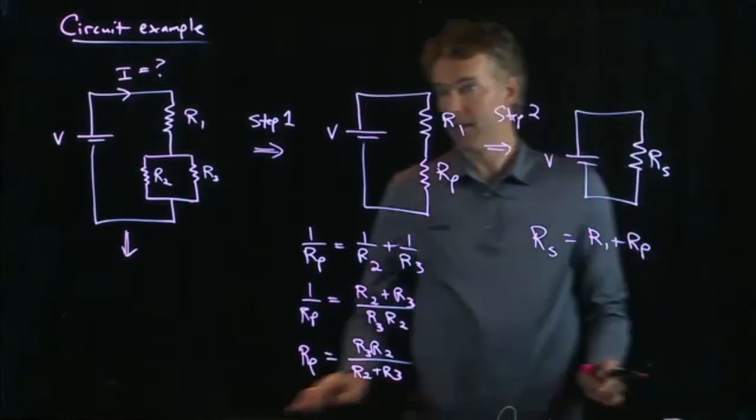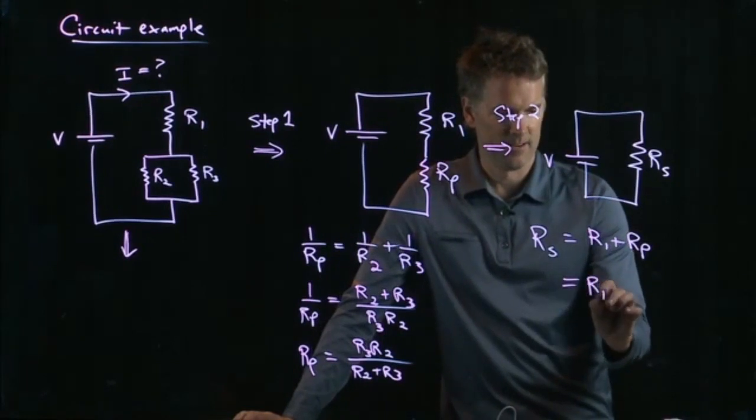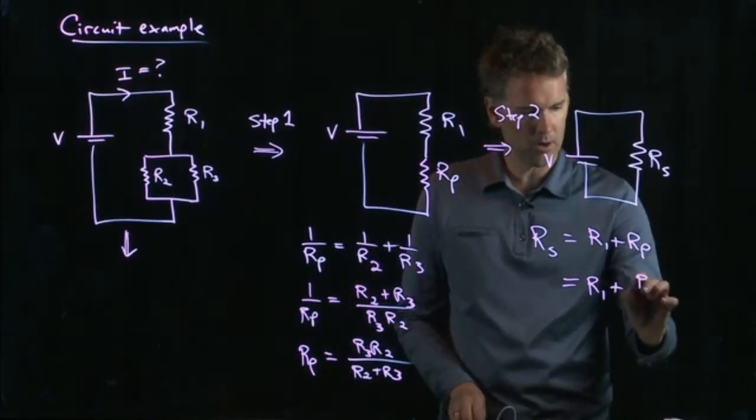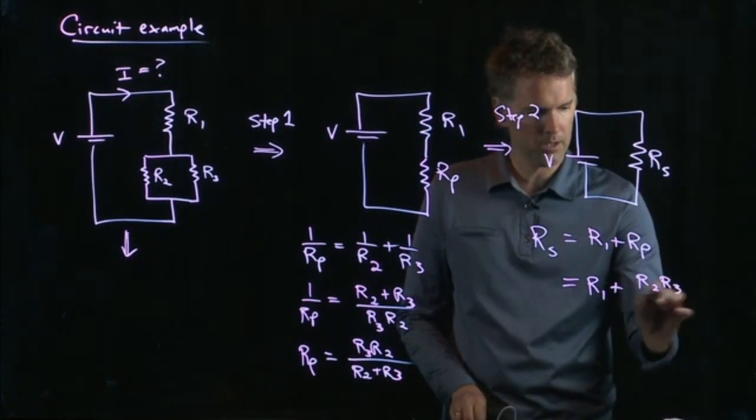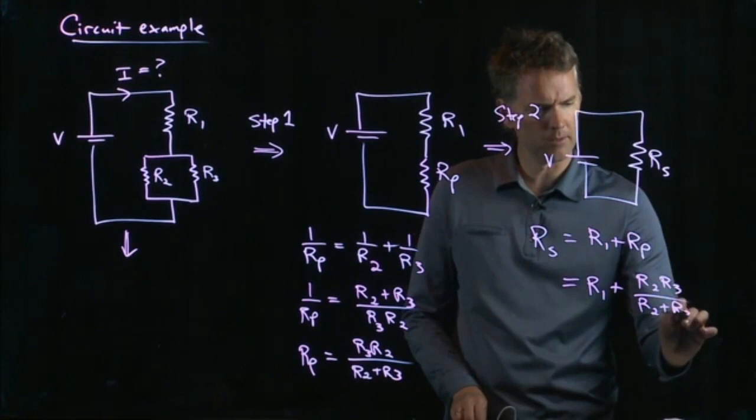R1 plus Rp, which is R2 R3 divided by R2 plus R3. Good, thank you. That makes a little more sense.